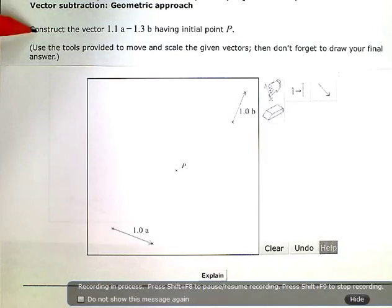Construct the vector 1.1a minus 1.3b having initial point P. Use the tools provided to move and scale the given vectors, then don't forget to draw your final answer.